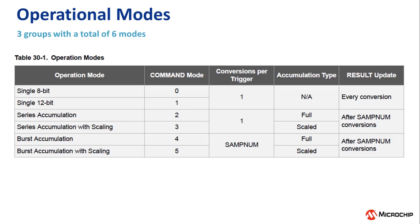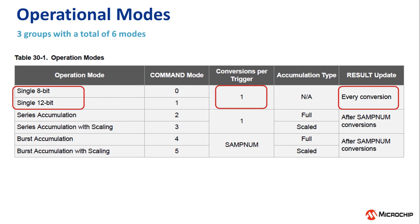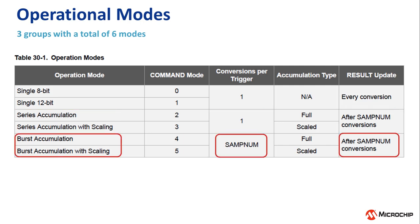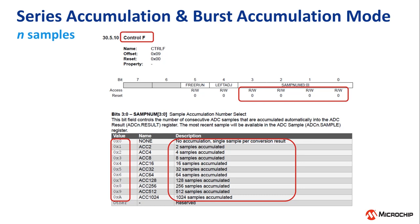There are three groups of operation modes when using the ADC, each with two modes, resulting in a total of six operational modes. The groups are single mode, series accumulation mode, and burst accumulation. Single mode results in a single ADC conversion for each trigger with an 8 or 12-bit conversion output, and the result register is updated after every conversion. Series accumulation results in one conversion per trigger with an accumulation of n samples, and the result register is updated after n conversions. Burst accumulation results in a burst with n samples accumulated as fast as possible after a single trigger, with the result register updated after n conversions. In both series and burst accumulation modes, n samples is set using the SAMPNUM bit field in the ADC CTRLF register, with values ranging from 2 to 1024 in powers of 2.